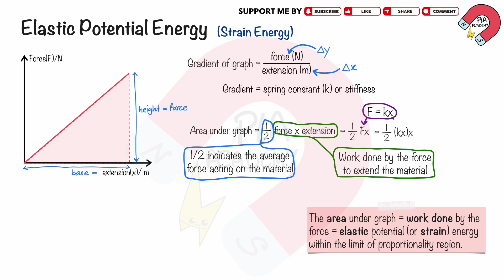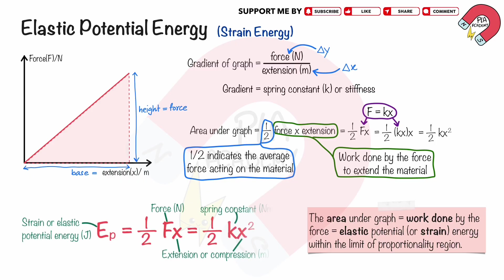We substitute F equals kx. We simplify the equation as half k times x squared. Therefore, the strain energy Ep equals half of F·x, or half of k·x squared. Where Ep is the strain or elastic potential energy in joules, F is force in newtons, x is the extension or compression in meters, and k is the spring constant of stiffness in newtons per meter.